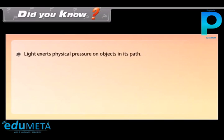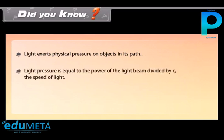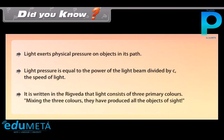Did you know? Light exerts physical pressure on objects in its path. Light pressure equals the power of the light beam divided by C, the speed of light. It is written in the Rig Veda that light consists of three primary colors, and by mixing these three colors all the objects of sight are produced.